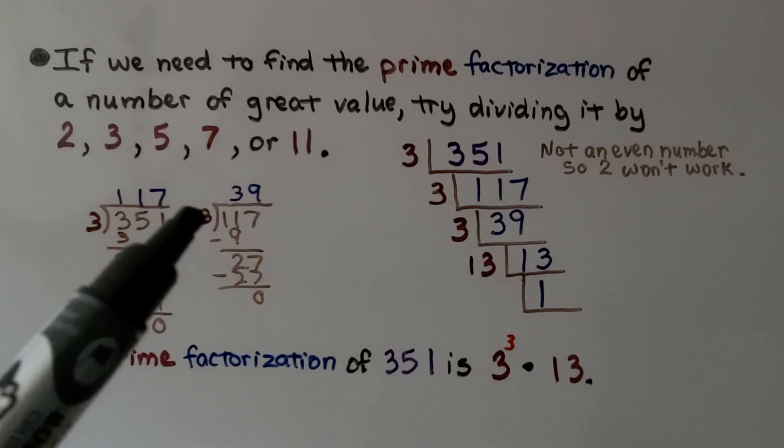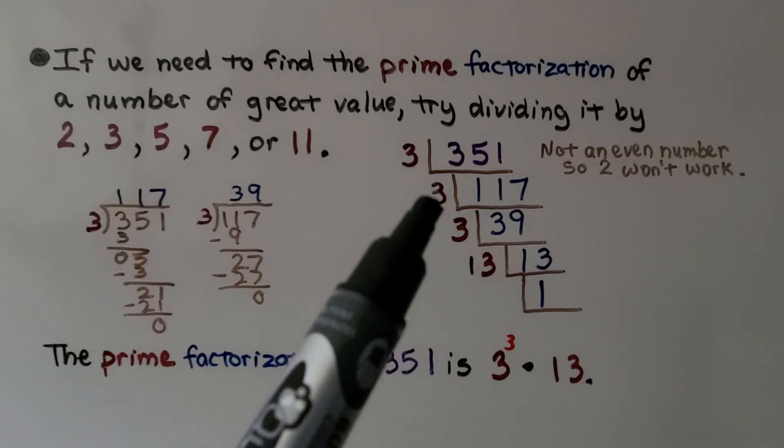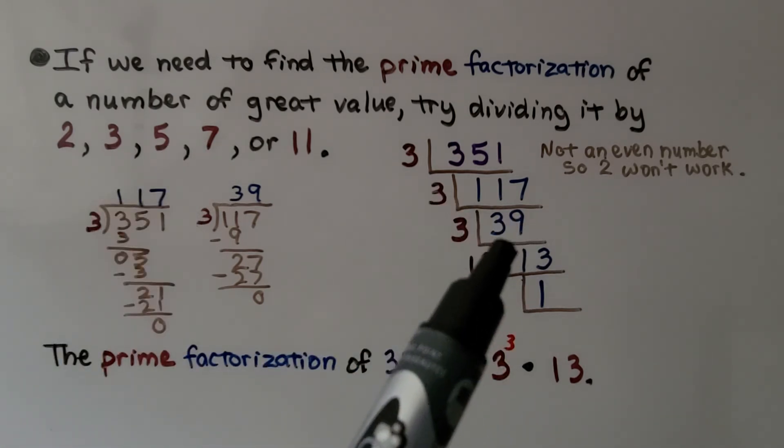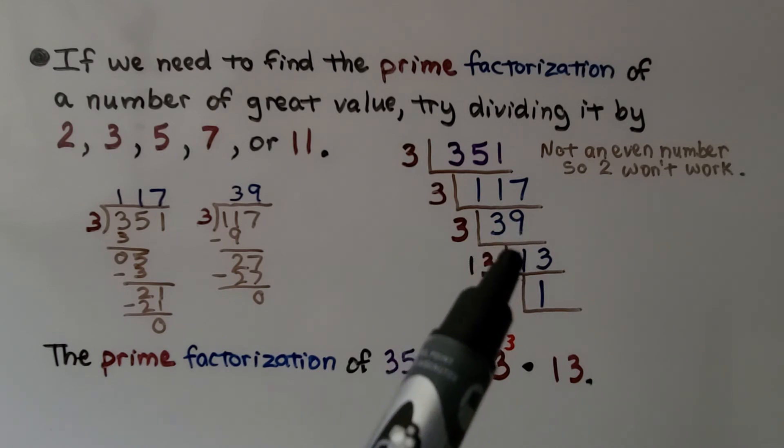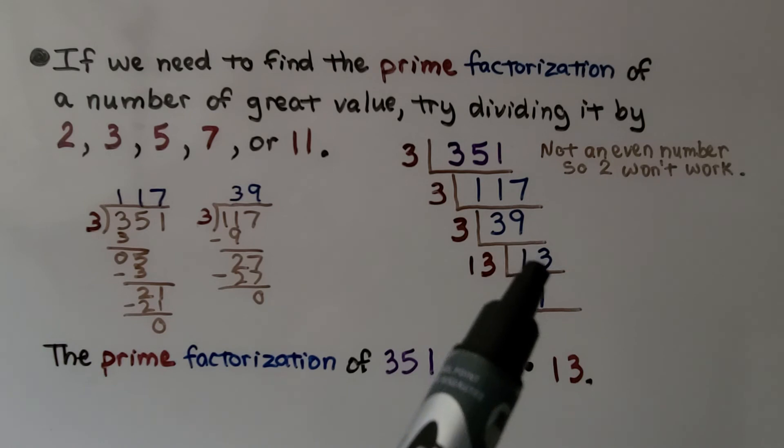Then I tried dividing 117 by 3, and I got 39. So we put a 3 here, and we put 39 here. 39 is easier to work with. 3 can go into 39 thirteen times. So I wrote a 13 here.